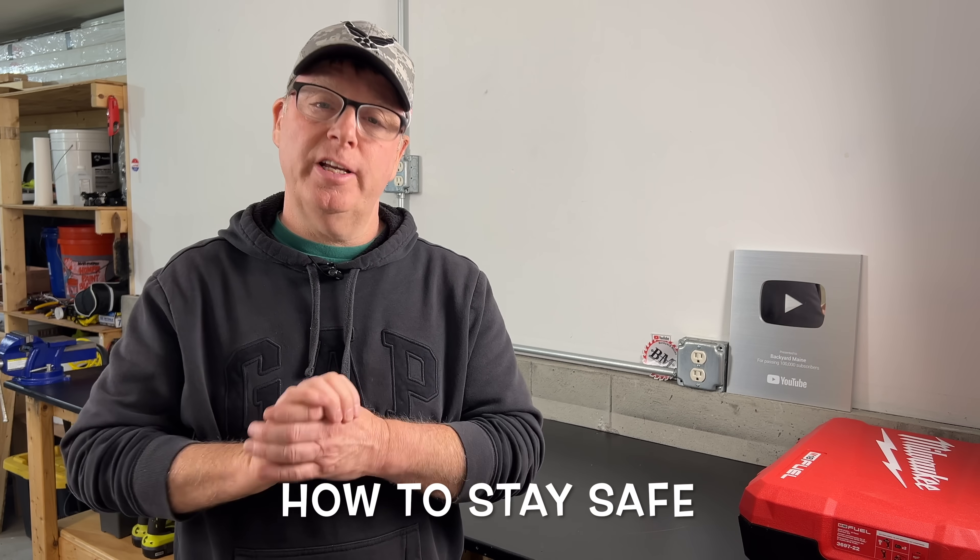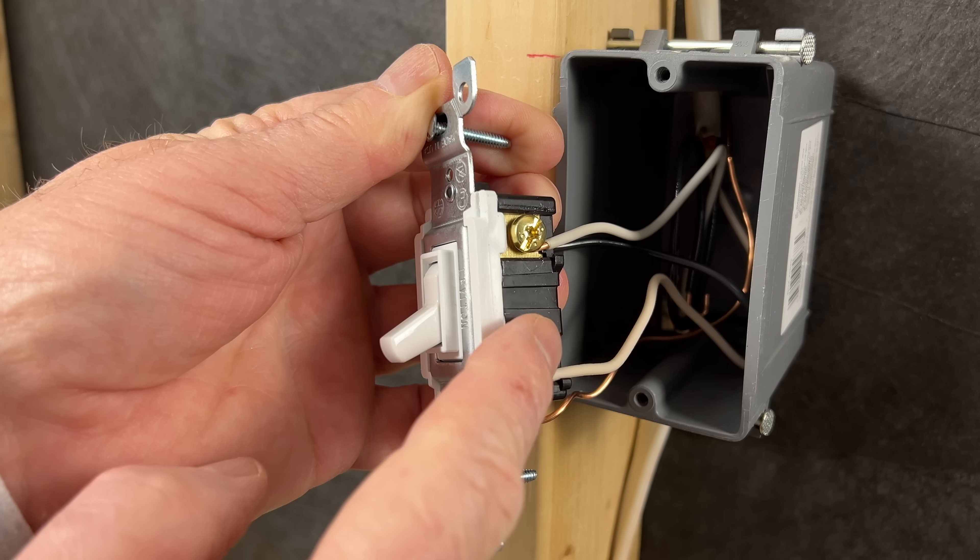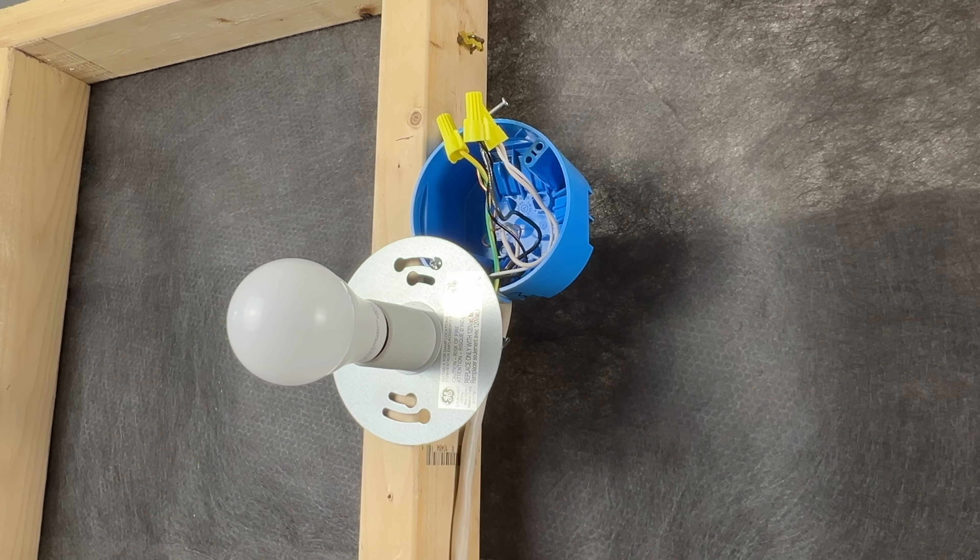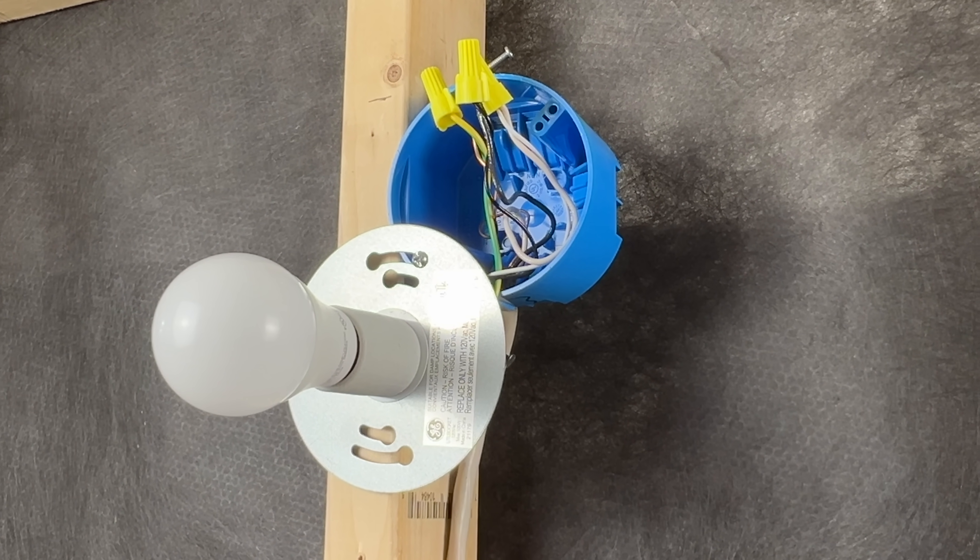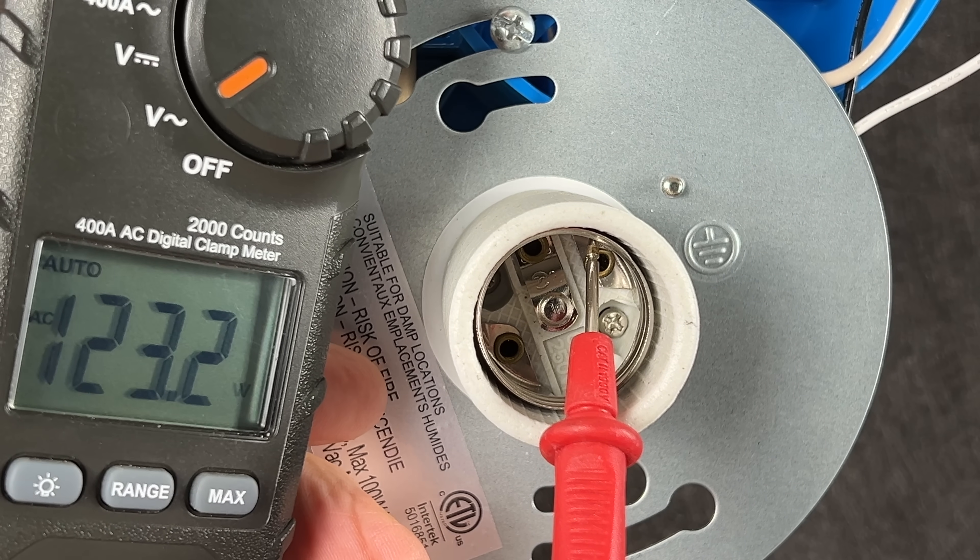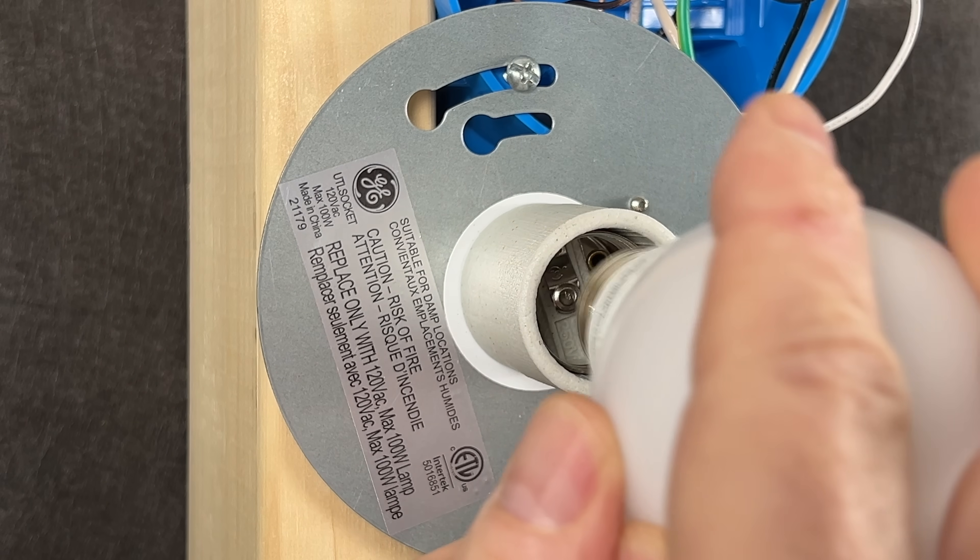So how do we stay safe? If you encounter a Chicago three-way, don't assume that the white wire is your neutral. Don't assume there's no power at the fixture when the light is switched off. And with the screw shell energized, be very careful when replacing light bulbs. It may be best to cut off power to the circuit just to be on the safe side.